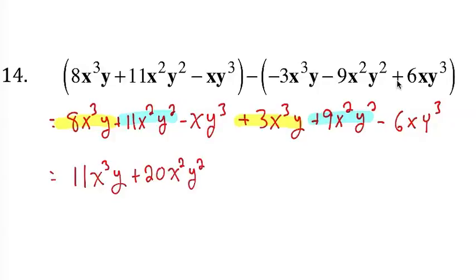All right, and the final one. Minus xy to the power of 3, minus 6xy to the power of 3. So I have minus 1 minus 6 is minus 7. So minus 7xy to the power of 3.